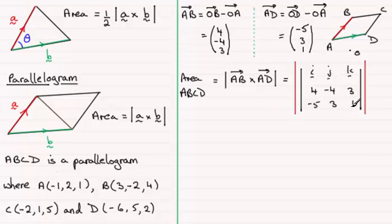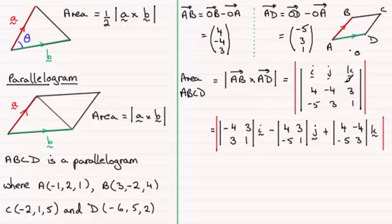So in the usual way if we expand the determinant here, we're going to have the magnitude of I times the determinant (-4, 3, 3, 1). Then it's going to be minus J times its determinant which will be (4, 3, -5, 1). And then for K it's plus K times the determinant (4, -4, -5, 3).